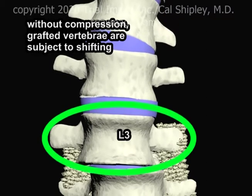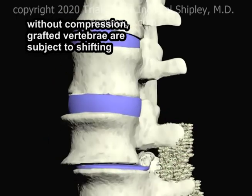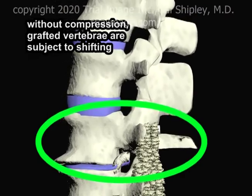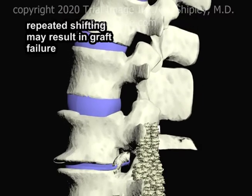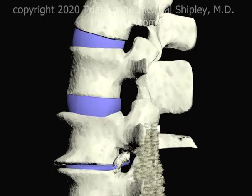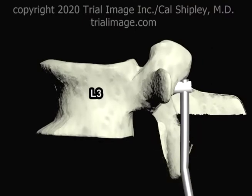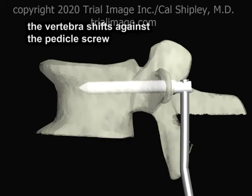Without compression, the grafted vertebrae in the intertransverse fusion procedure are subject to shifting. Repeated shifting of the vertebrae may eventually result in postoperative graft failure. In addition, vertebral shifting may apply stress to the pedicle screws used to attach struts, resulting in erosion of vertebral bone.